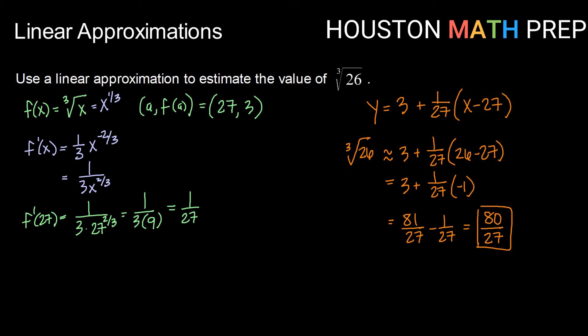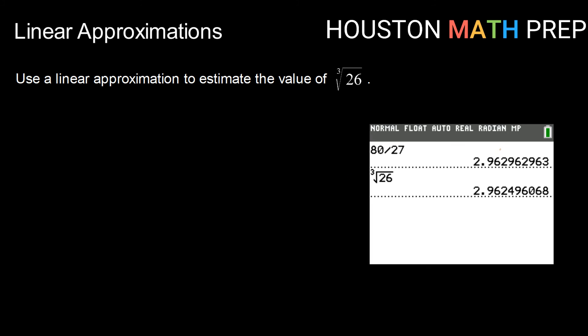Just to see how well we did: 80/27 gives us approximately 2.9629, and the true value of the cube root of 26 is 2.9624 and so on. Just like the last example, we don't see a difference until the fourth decimal place. Keep in mind, that's because 26 and 27 are very close together — the further away from a perfect cube you have to work, the bigger the error in your approximation. Alright, that does it for this video on linear approximations. We'll catch you in a future one.